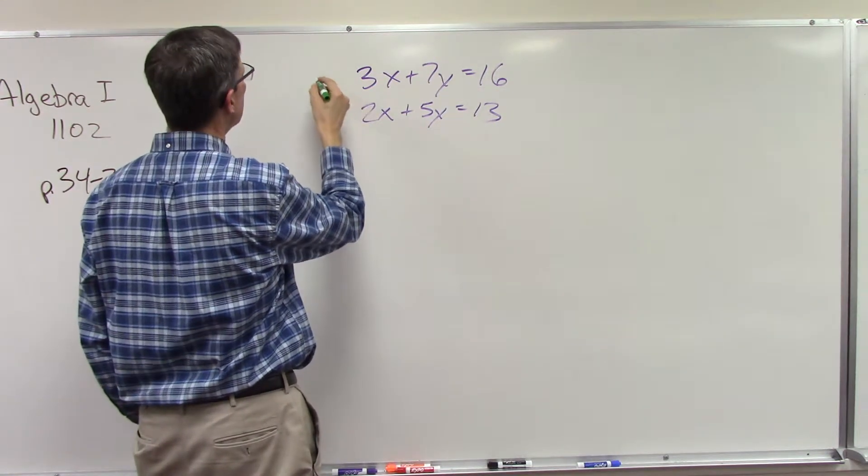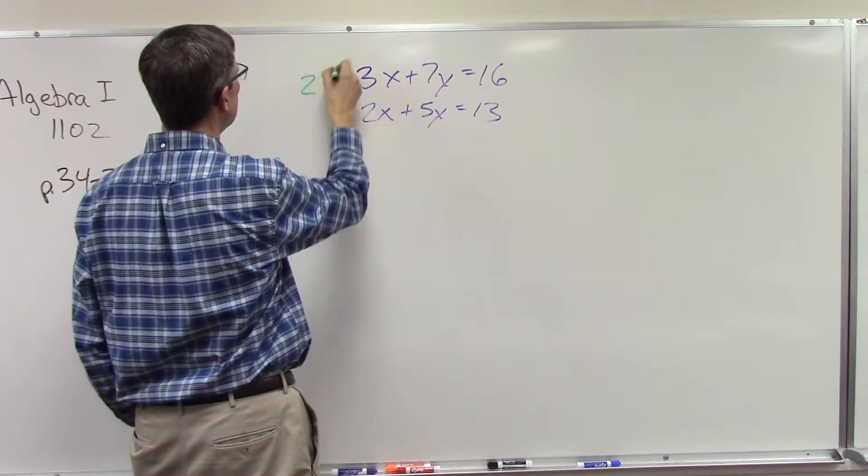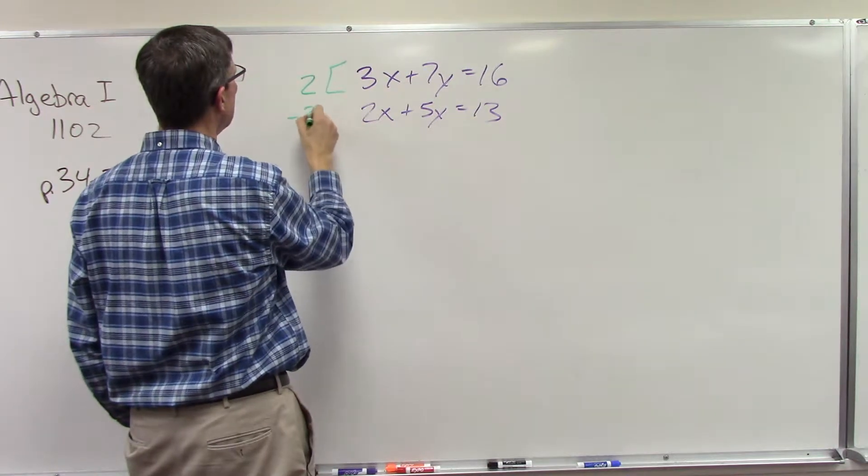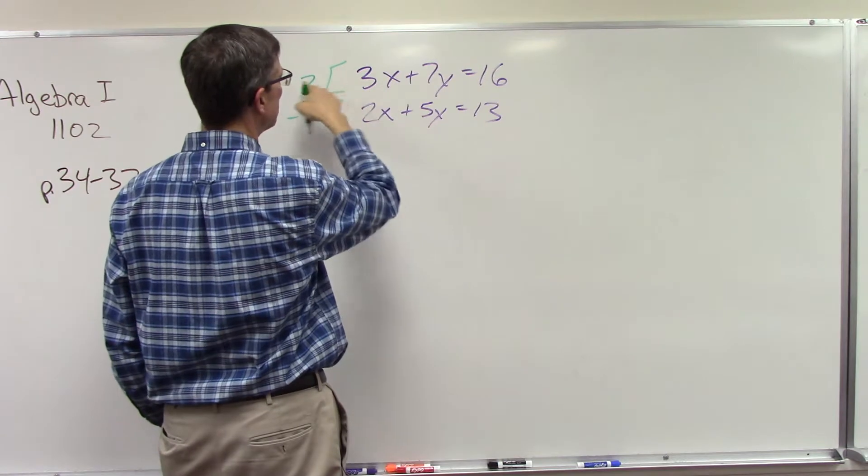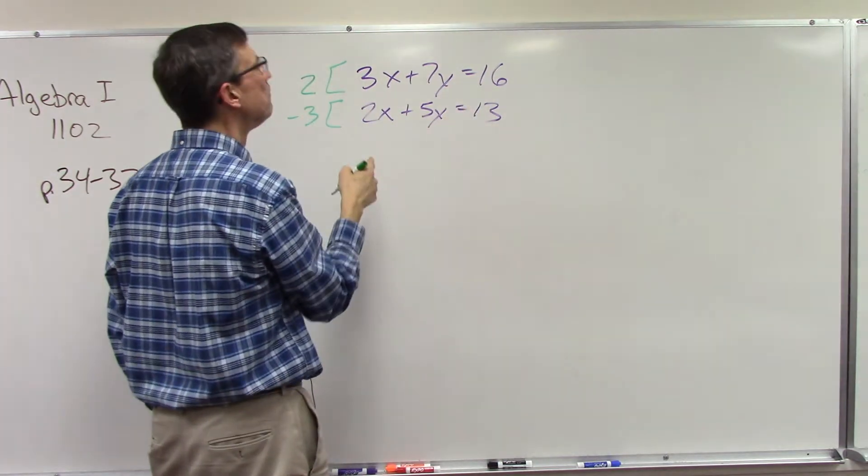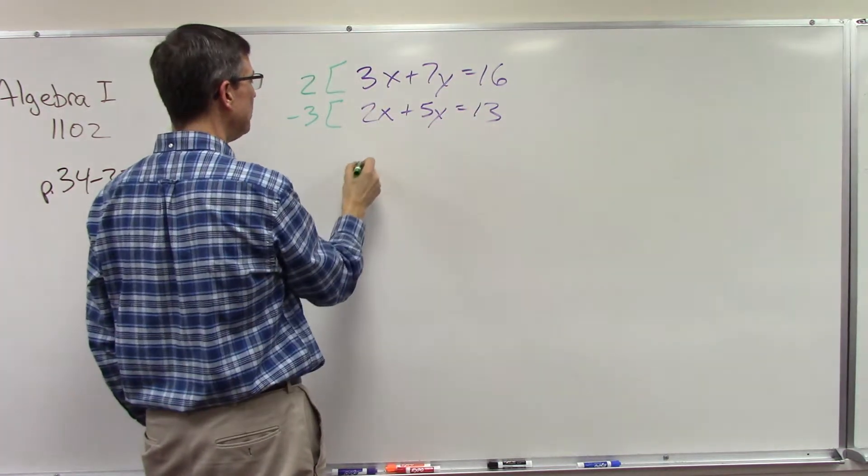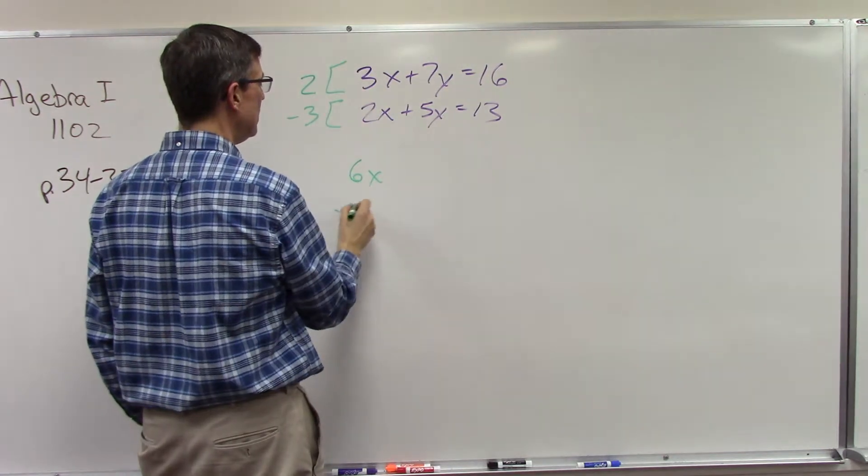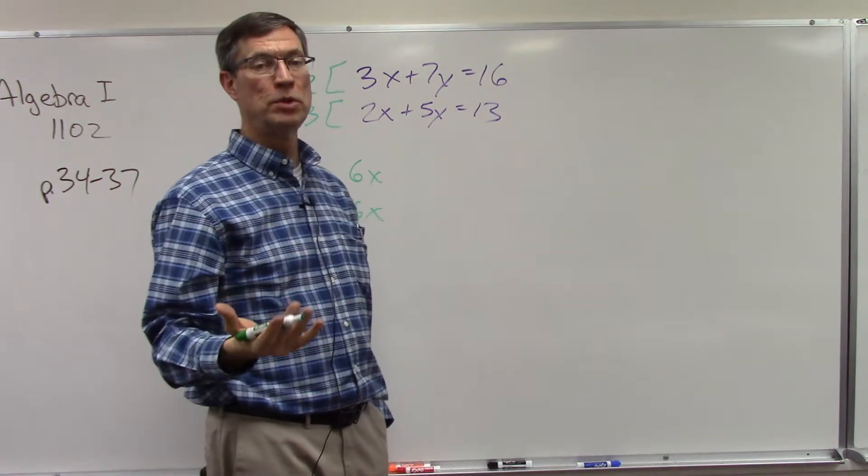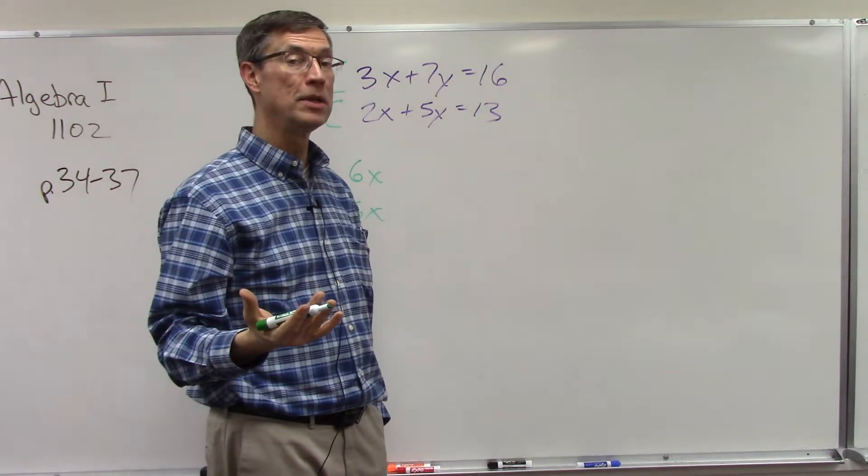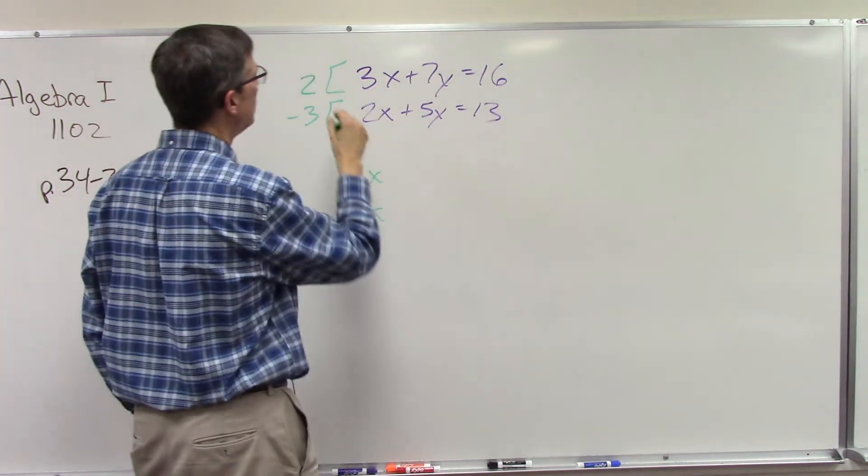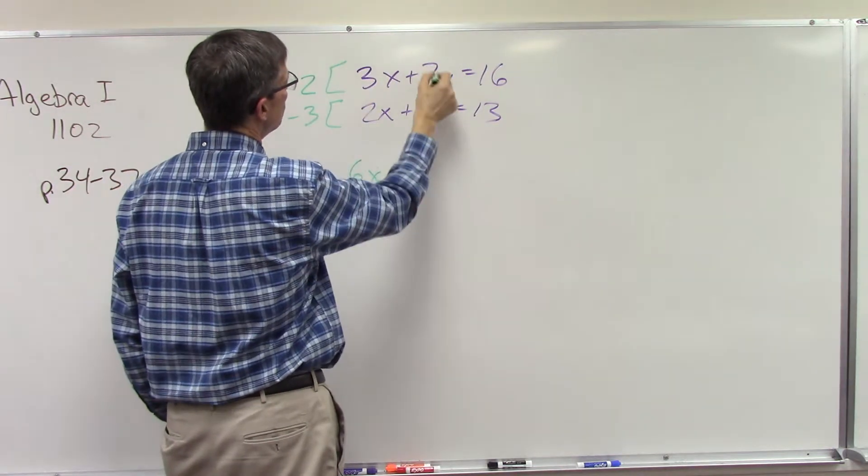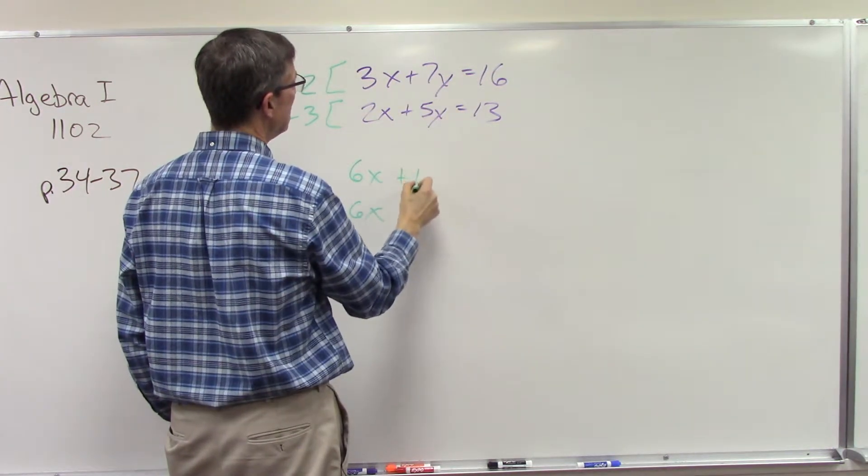If I multiply this equation through by 2 and this one by negative 3 - and I'm talking the whole equation, multiply everything through - then I would end up with 6x and down here negative 6x. Beautiful, because now when I add the equations the x's will be gone. But I have to finish - I have to do everything in the equation. So I distribute the 2 times the positive 7, get 14y. 2 times 16 equals 32.